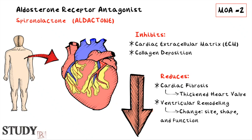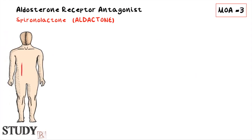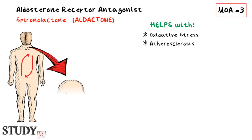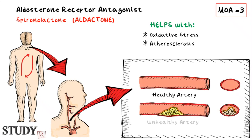Third, aldosterone receptor antagonists work on the body systemically by helping with oxidative stress due to the release of aldosterone by the kidney. Spironolactone will also be beneficial when a patient is in a pro-inflammatory state such as atherosclerosis, which is when the arteries harden and narrow. Slowly over time the arteries become blocked and puts blood flow at risk, possibly leading to stroke or death.